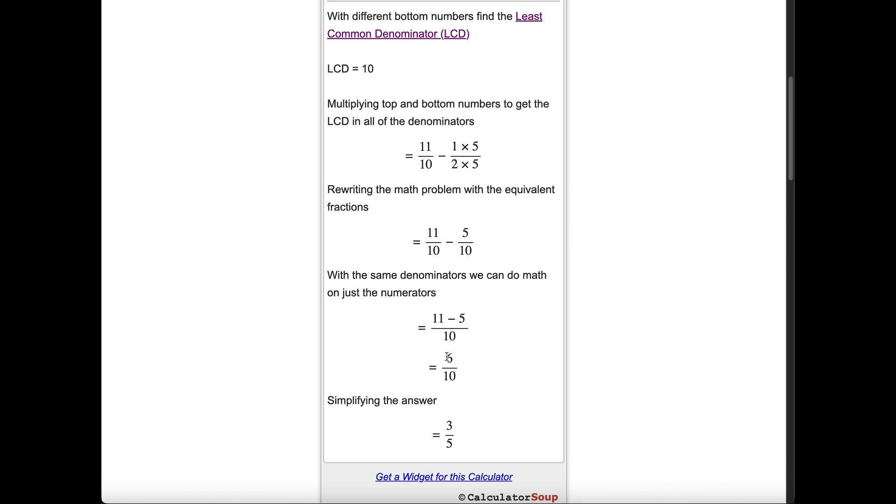Our equation is now 11 tenths minus 5 tenths. 11 minus 5 is 6, and that goes over 10 for a result of 6 tenths.